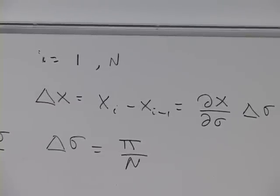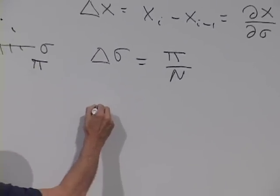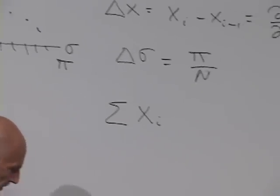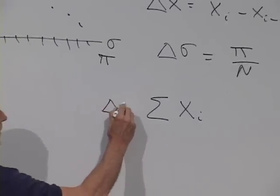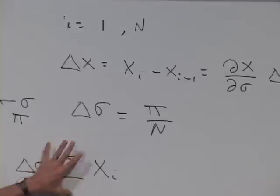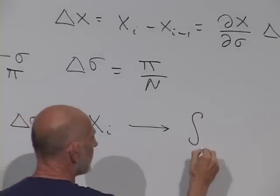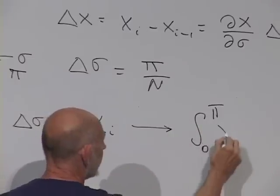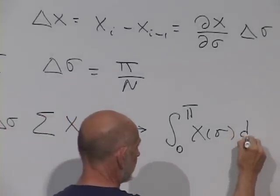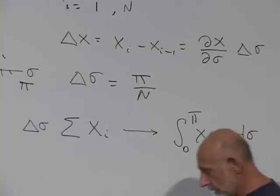And finally, the formula for integrals. Let's imagine adding up all the x sub i's. If you multiply by delta sigma — which is pi over n — that sum becomes, in the limit, the integral from 0 to pi of x of sigma d sigma. We simply replace x of i by x of sigma and delta sigma becomes d sigma. It's essentially the definition of an integral, and I want these equations on the blackboard because we'll use them several times.